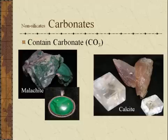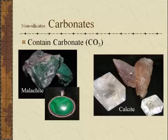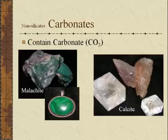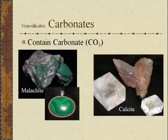The non-silicate group carbonates contain CO3. Keep in mind: CO is carbon monoxide, CO2 is carbon dioxide, but CO3 is the carbonate group. Copper carbonate, or this beautiful malachite, is a lovely green stone frequently used in jewelry. Calcite, on the other hand, is a calcium carbonate. This very common mineral is the main component of the rock limestone, so it's very common on the surface of the earth.